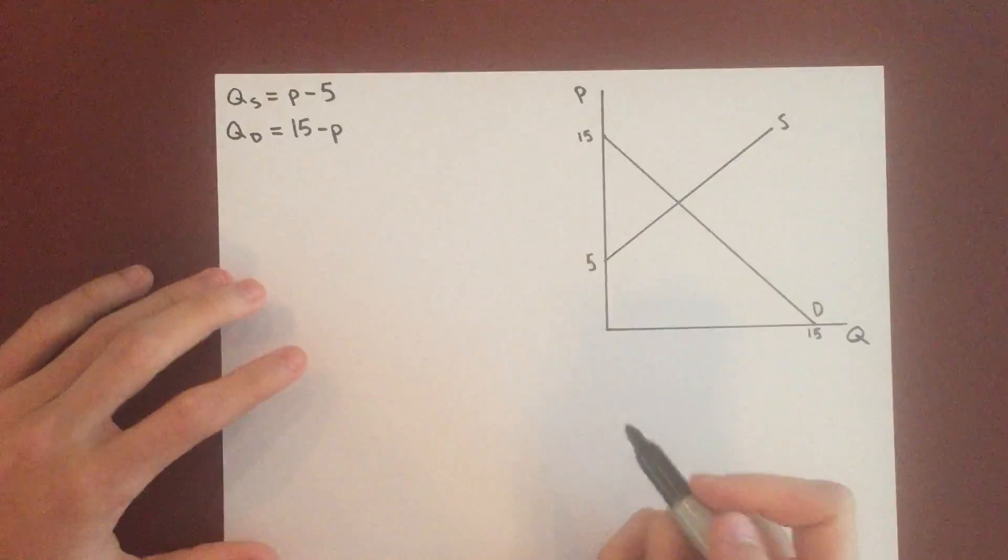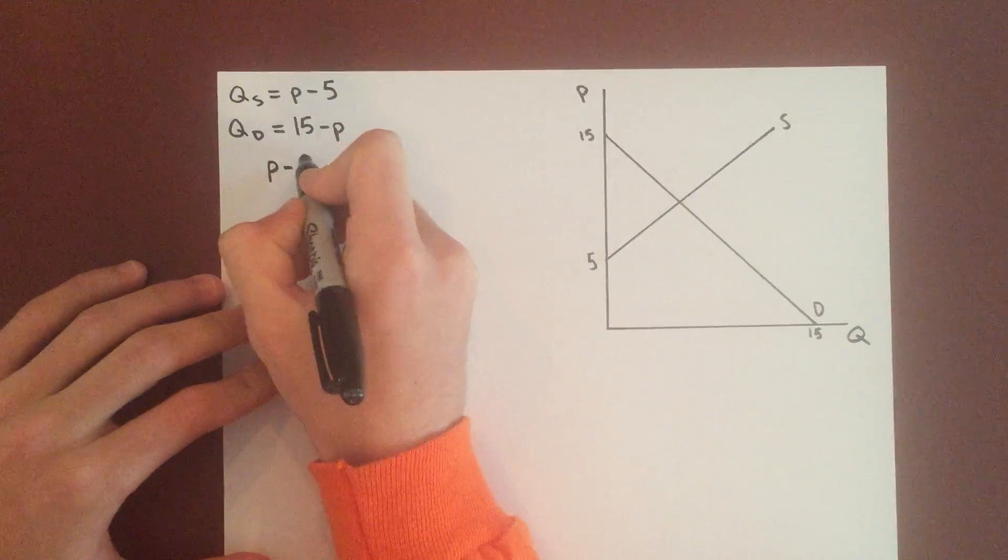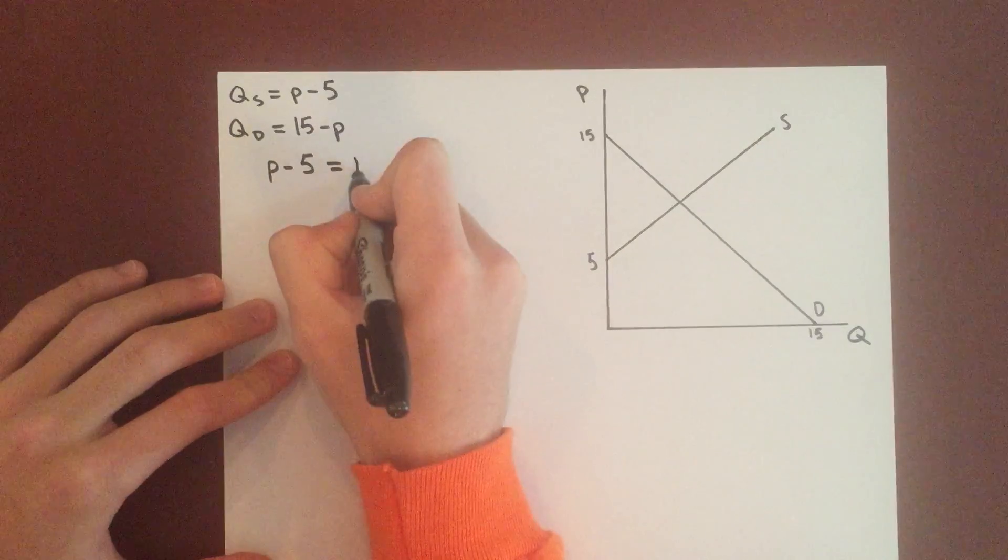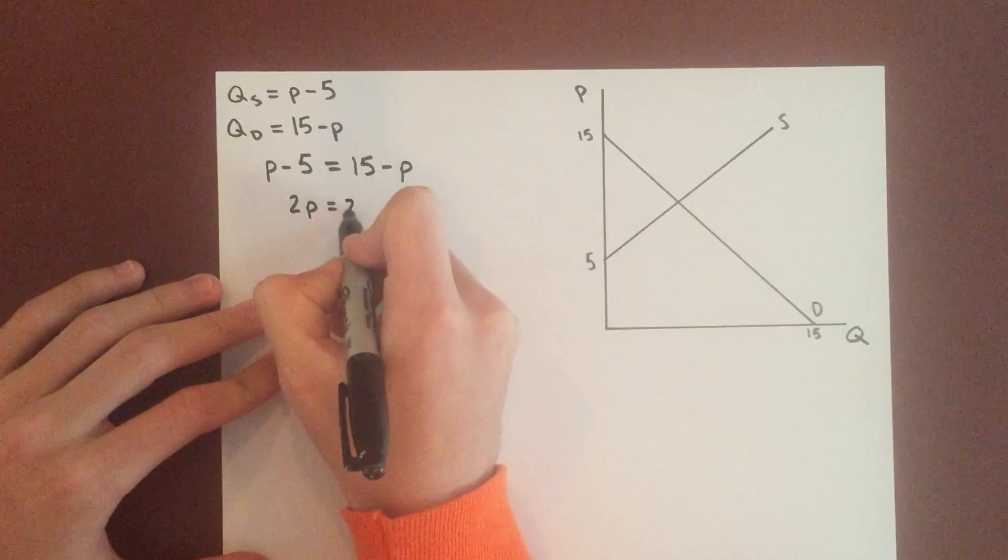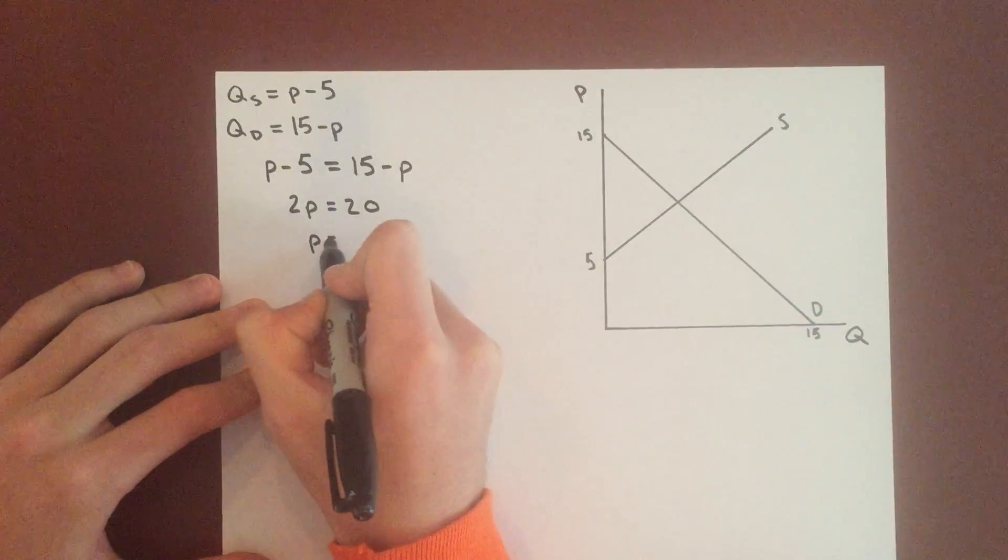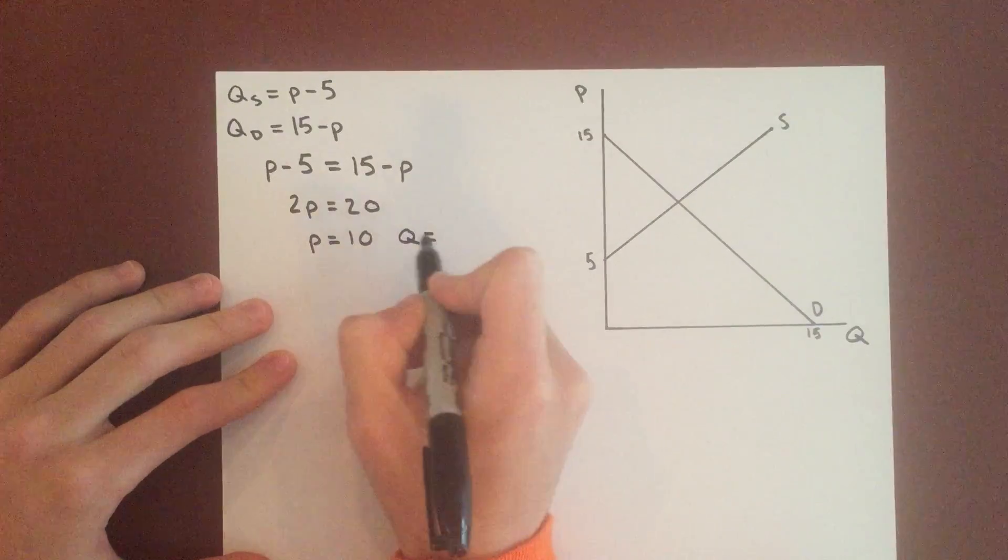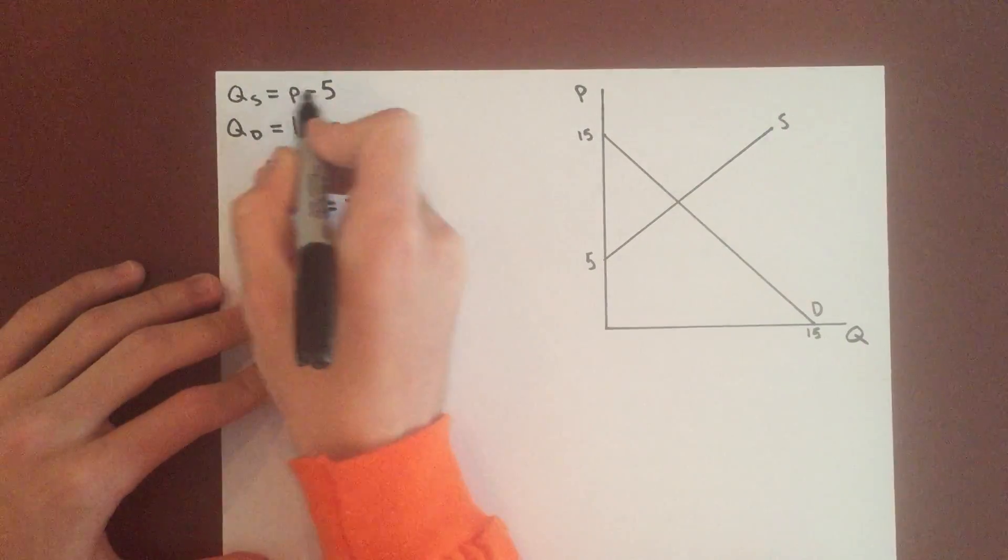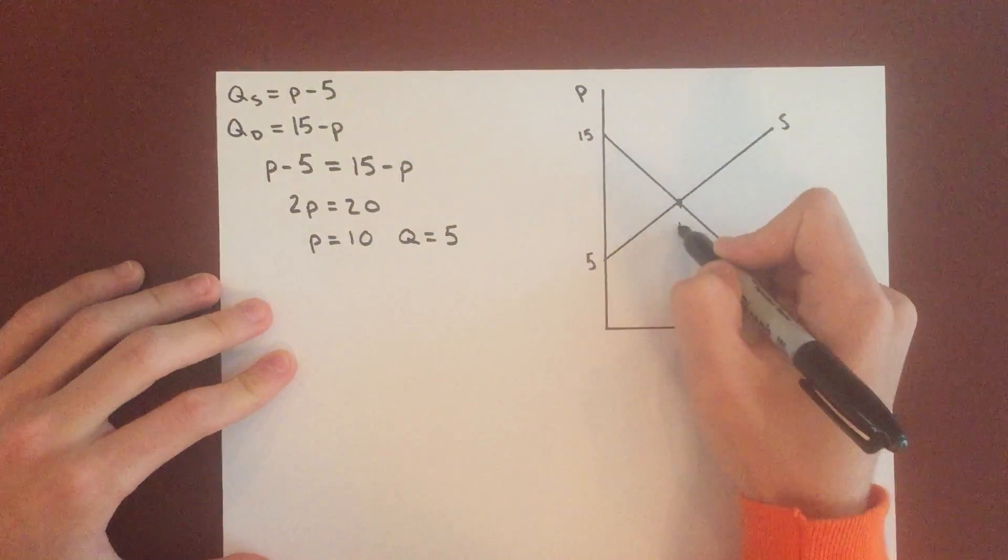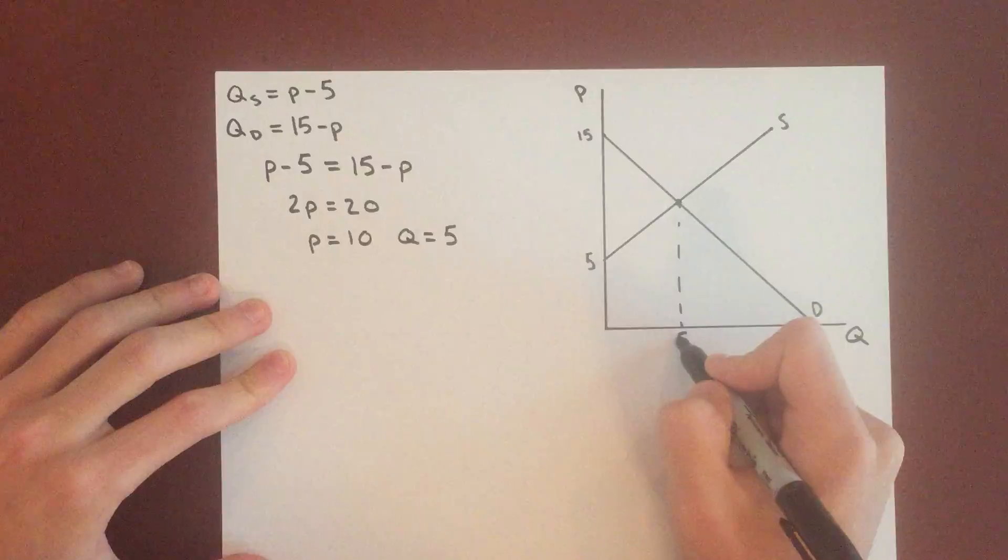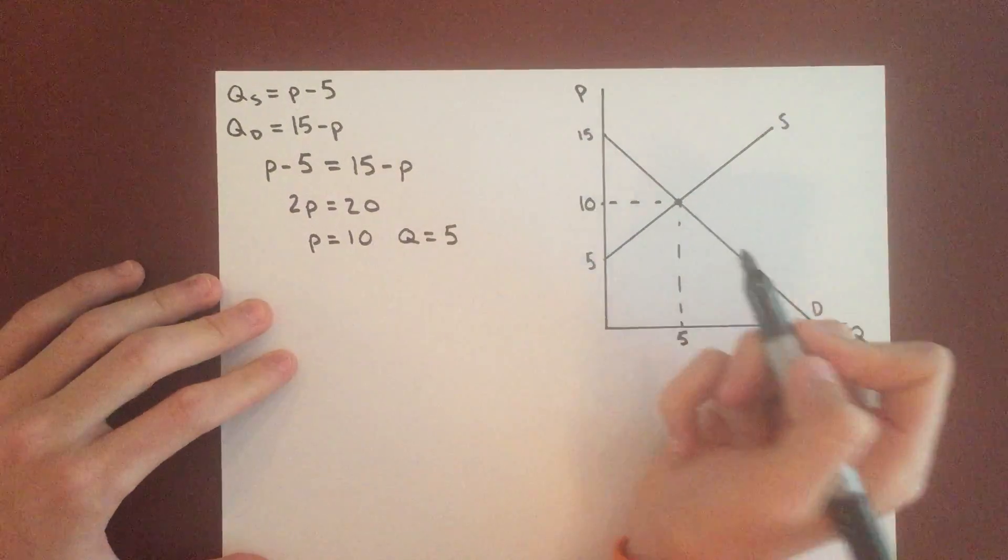So first off let's find equilibrium without the price floor. Setting supply and demand equal to each other, we have 2P equals 20, so P equals 10, and that means that Q equals 10 minus 5 is 5. So you can just write that in here. Quantity of 5, price of 10. Graph's pretty good.